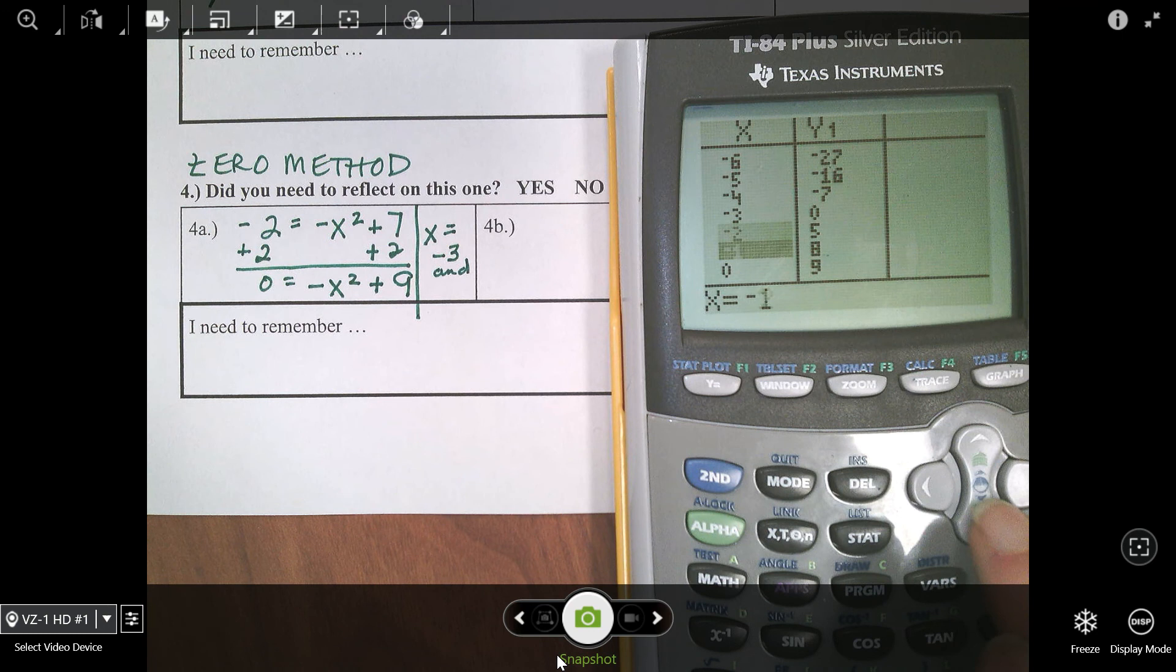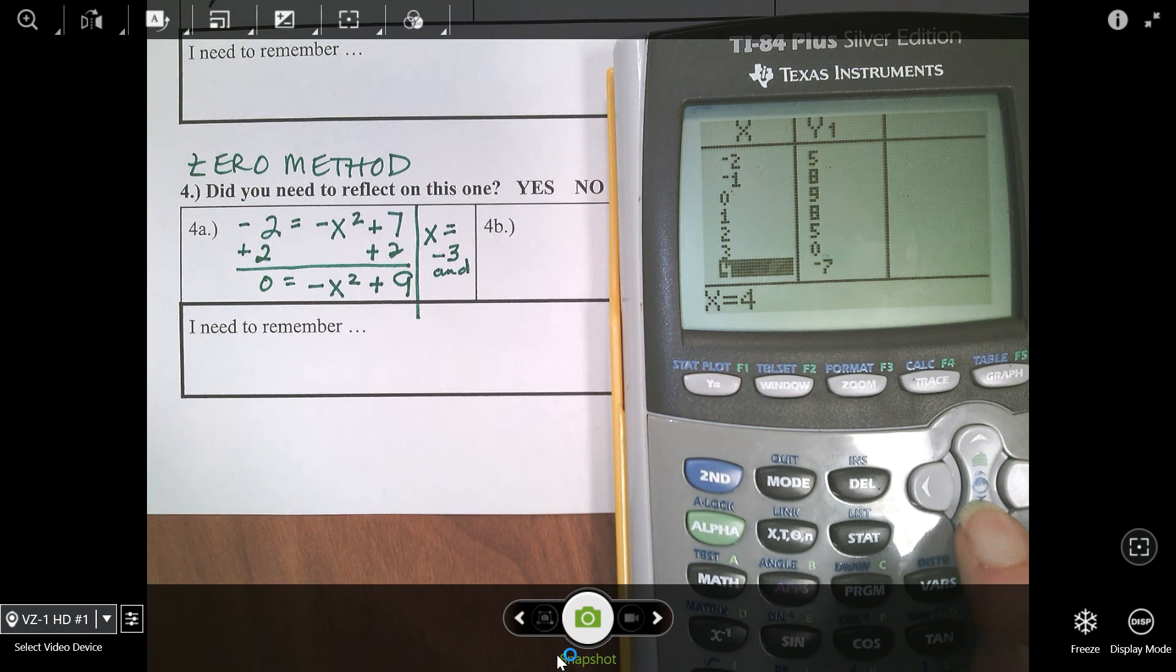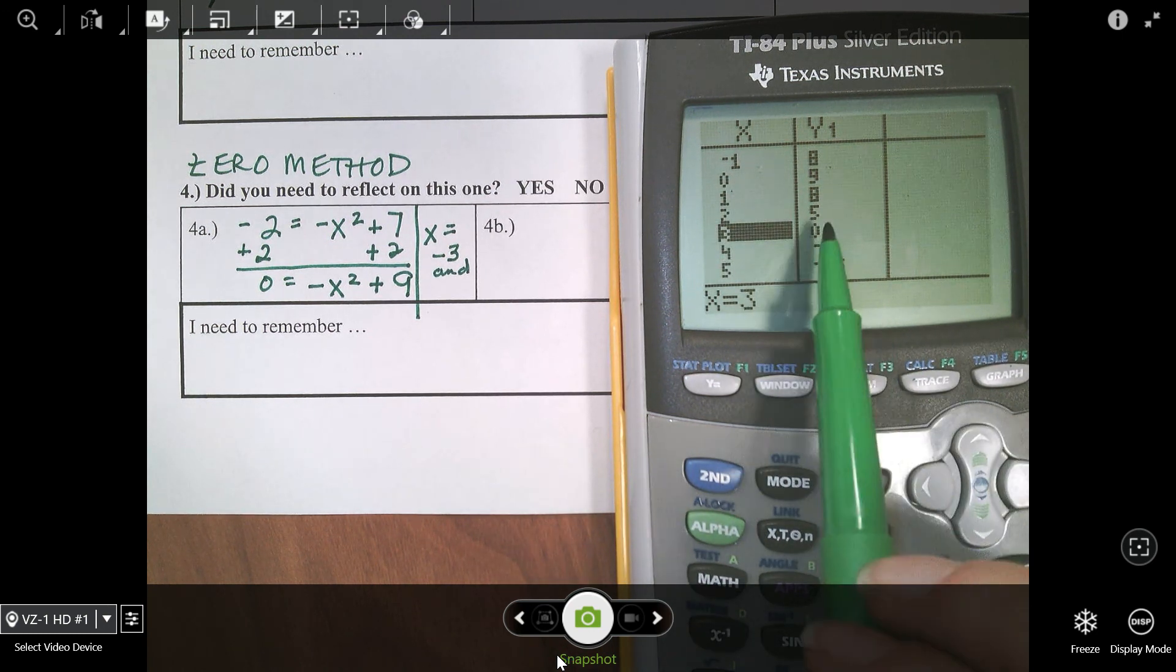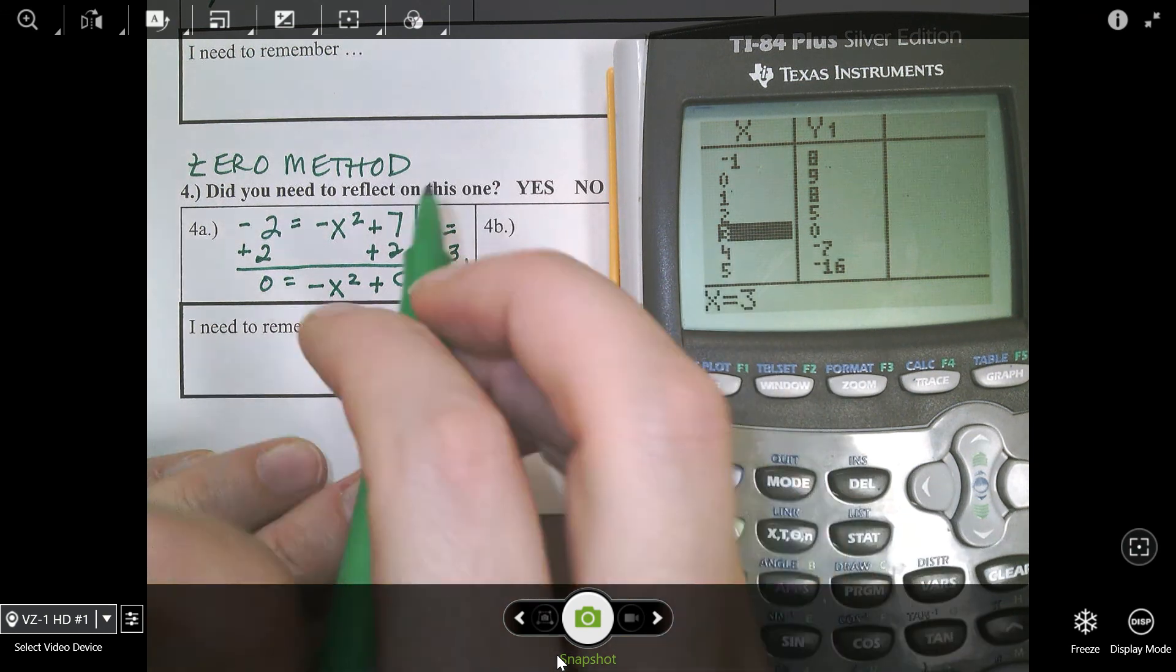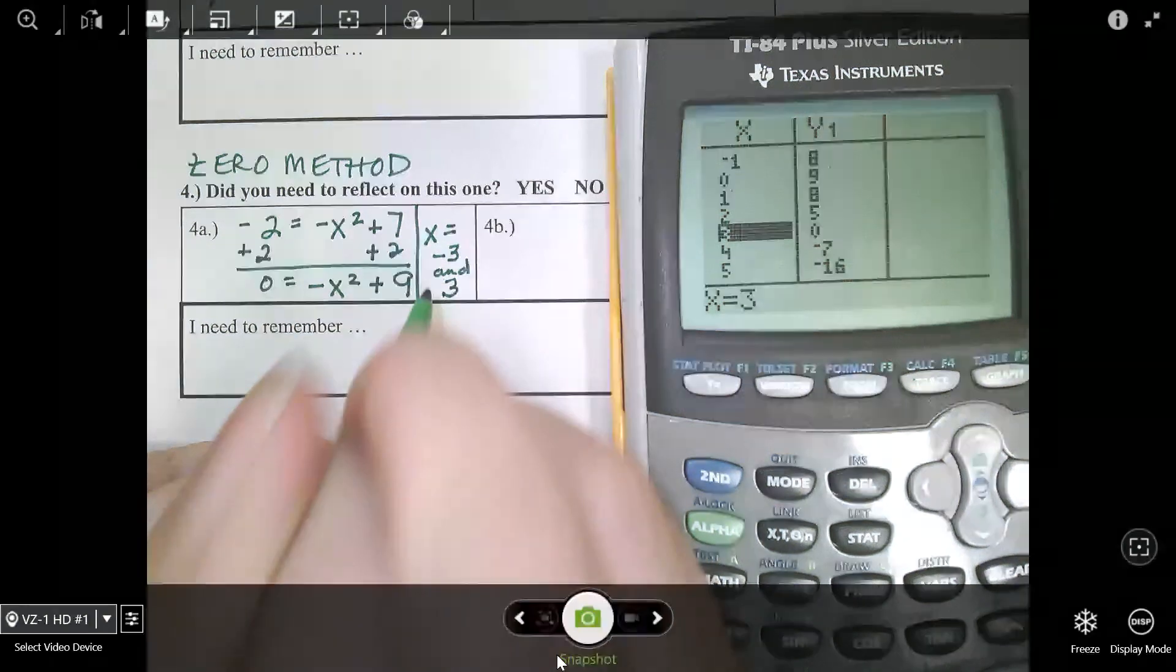I've got to scroll to find that other one. Oh, there's my other one. y equals zero, and the x value with it is three. So my solutions are negative three and three.